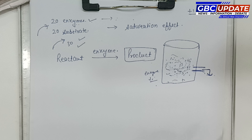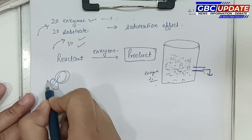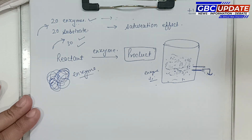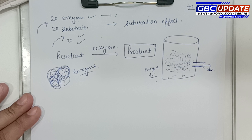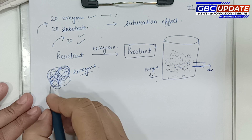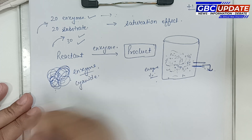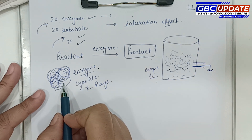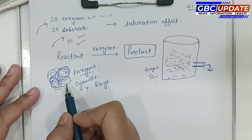The next factor is poisons and radiations. Certain poisons such as cyanide, and radiations such as X-rays, can destroy the tertiary structure of the enzyme. Since the enzyme is a protein, these agents denature it and render the enzyme ineffective and inactive.